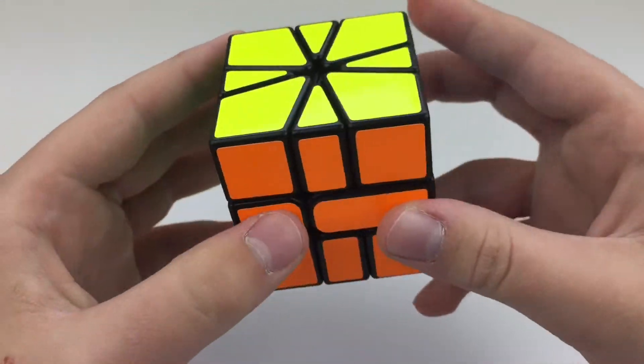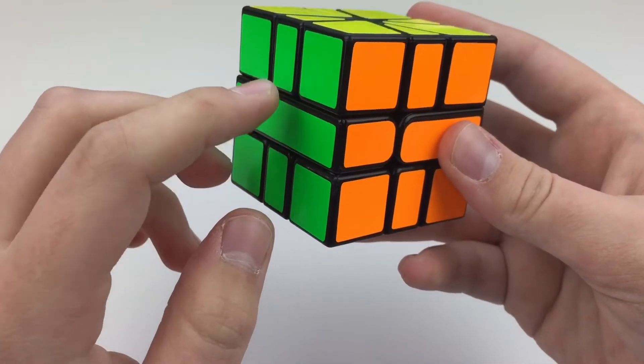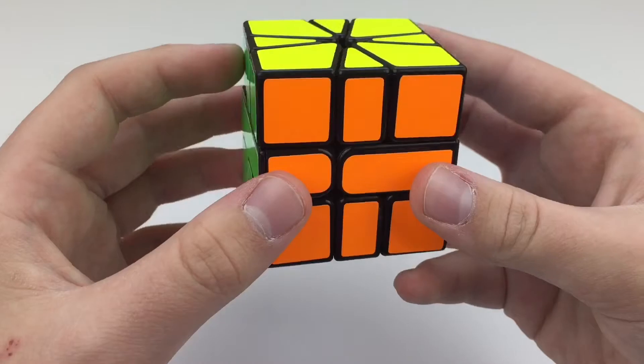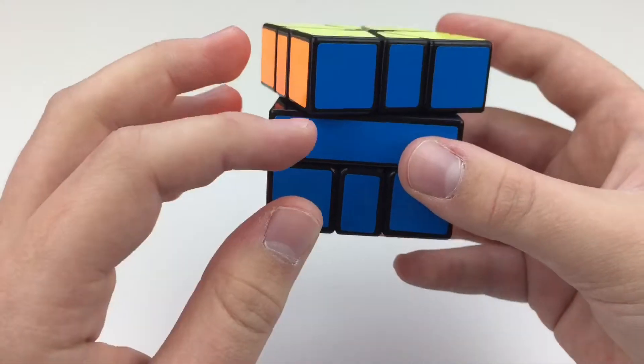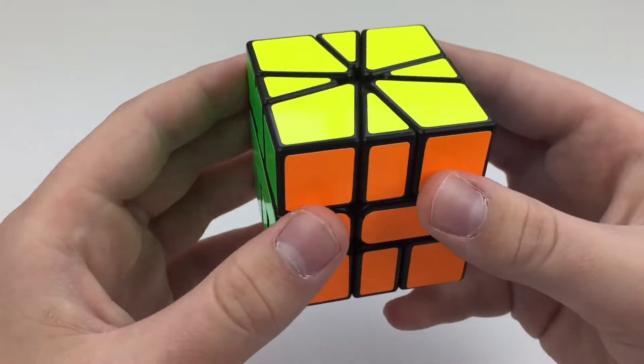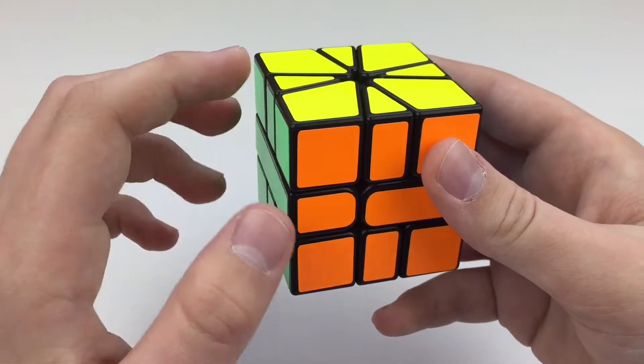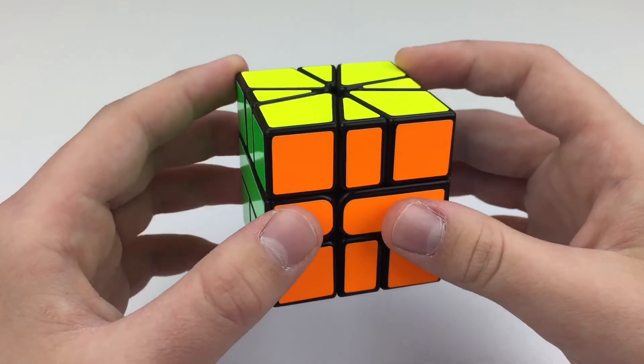And then what I did was I stickered it. There was some spring noise, so I lubed the spring with Lubicle 1. And then I lubed in between the layers with Lubicle Silk. And I lubed the outer part of the core, the spherical part, with DNM-37.